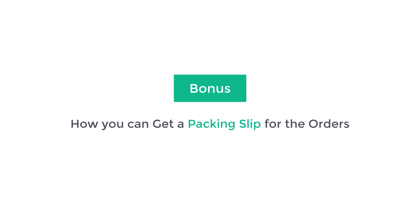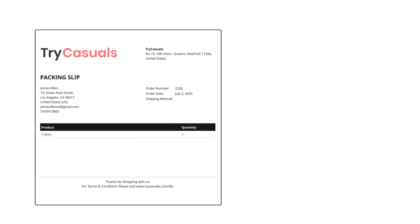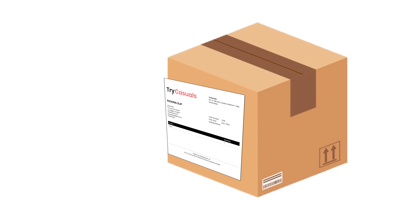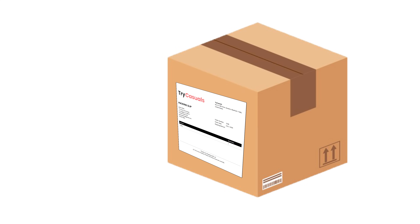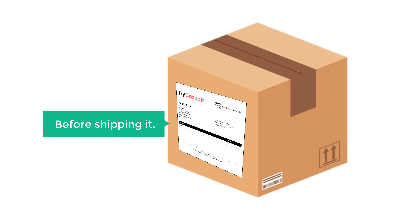Now let's go to the bonus part of this tutorial, where we see how you can get a packing slip for orders. A packing slip is a document that contains the customer's name and address, which you can paste on the package before shipping it.